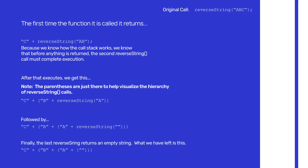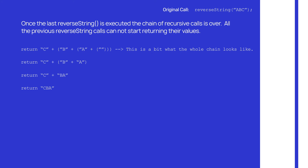So the last version of reverseString returns 'A' plus empty string — and notice there are no more recursive calls. At this point the values can actually be returned. It looks like: C + (whatever the second call returned) = C + B + (whatever the third call returned) = C + B + A + empty string. You add A plus empty string to get 'A', then B plus A to get 'BA', then C plus BA — and what you end up returning is 'CBA'. That's the final value. No more function calls.